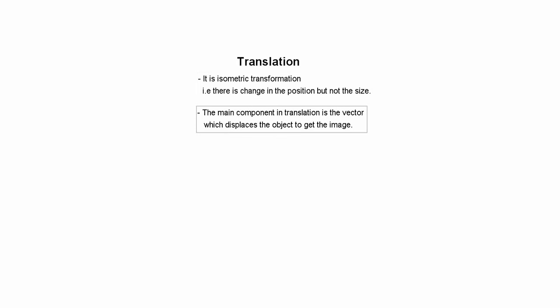Translation is an isometric transformation. That means there is change in the position but not the size. In translation, the main component is the vector which displaces the object to get the image.